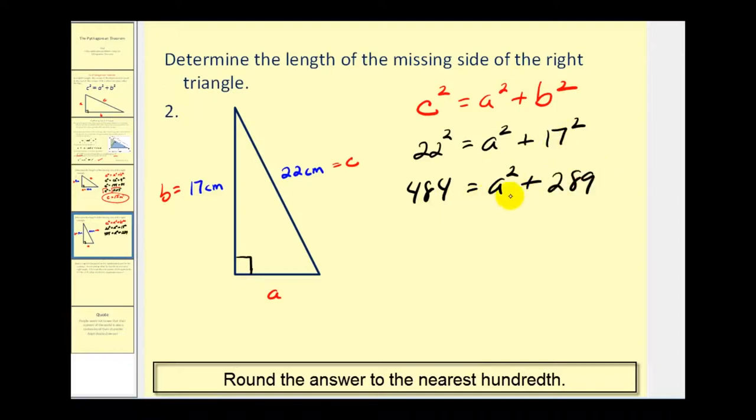So now we have to isolate the A squared, so we'll subtract 289 from both sides. So that gives us 195 equals A squared.